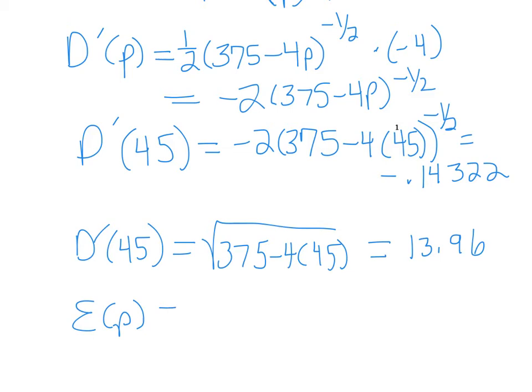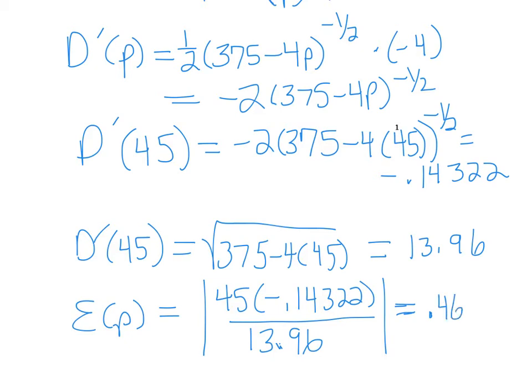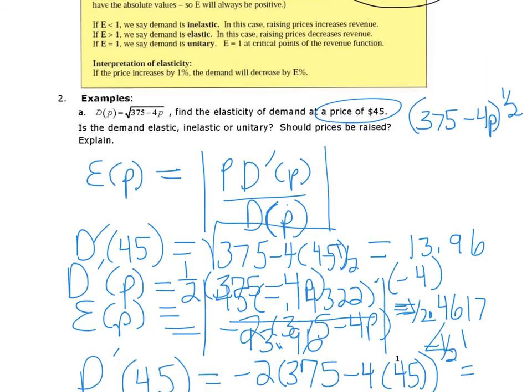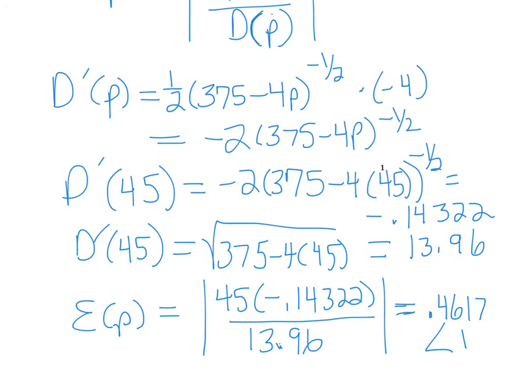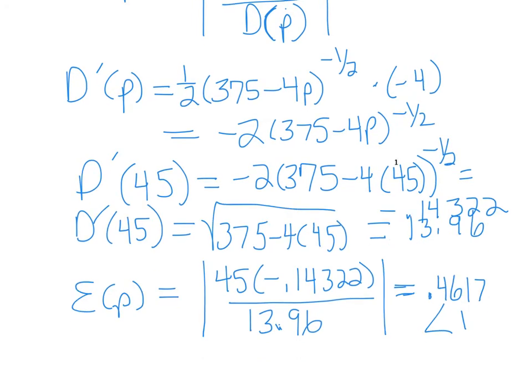So putting it all together, e of p, the elasticity of demand, is going to be 45 times the negative 0.14322 all over 13.96. And calculating that, we get, remember you're taking the absolute value, so we're going to get positive 0.4617. And that is less than 1. So if we go back up, if e is less than 1, it's inelastic. Raising prices increases revenue.